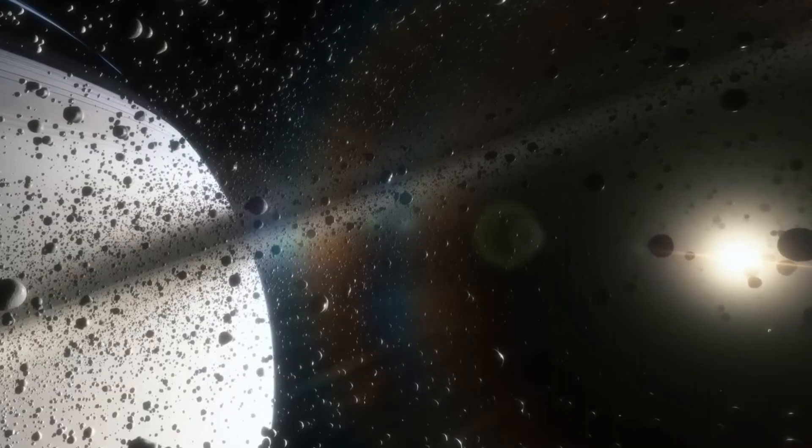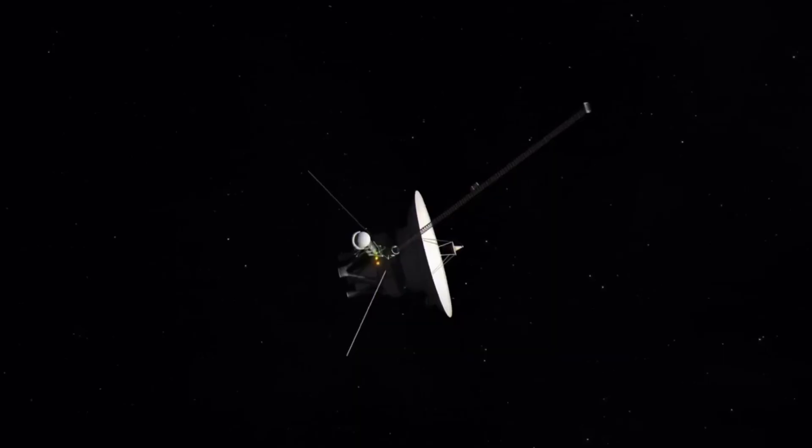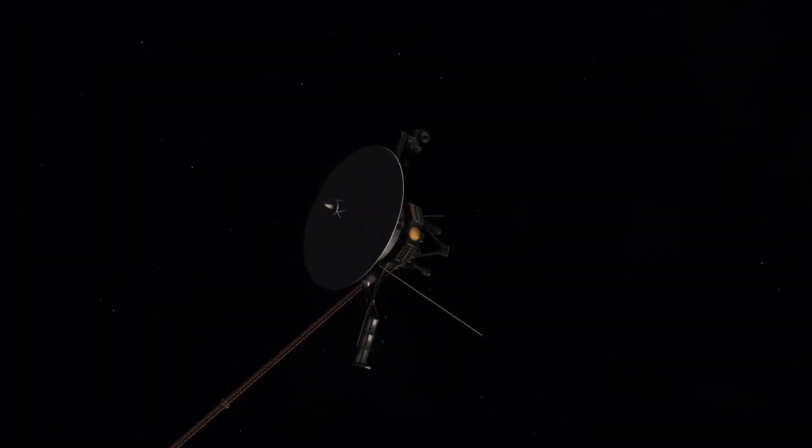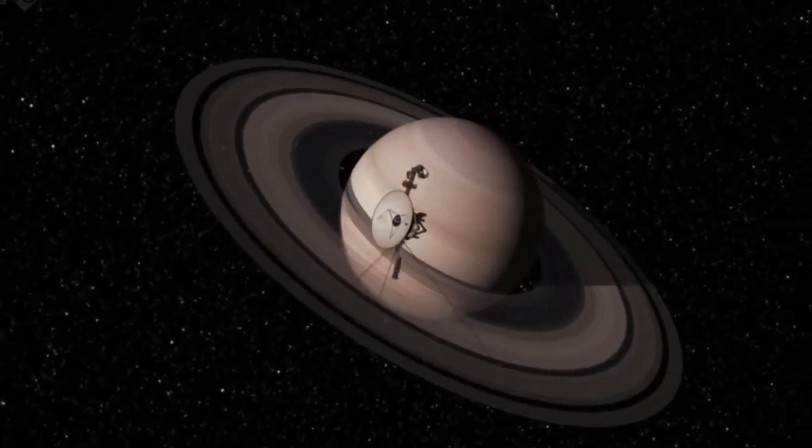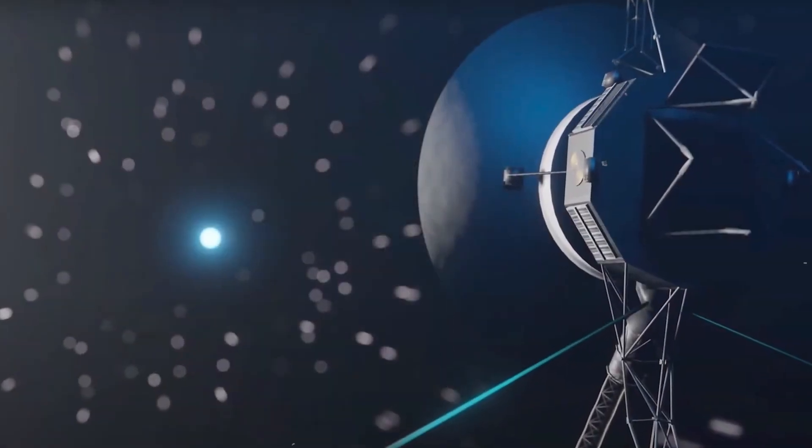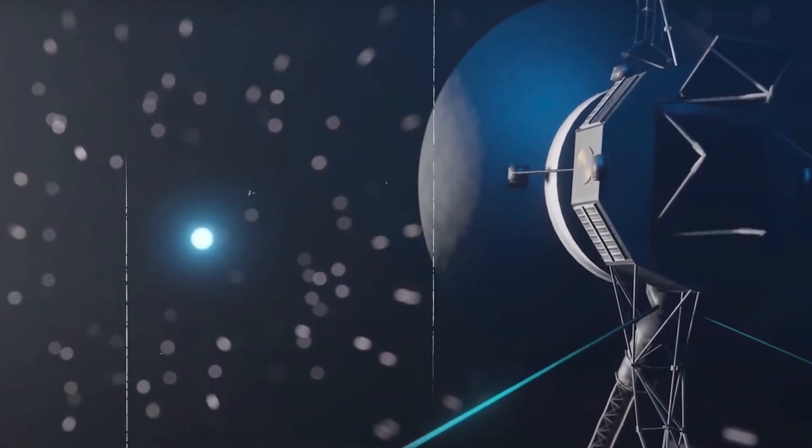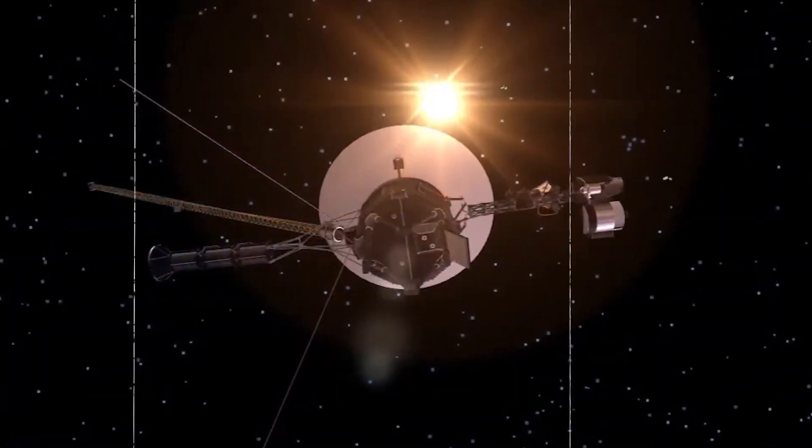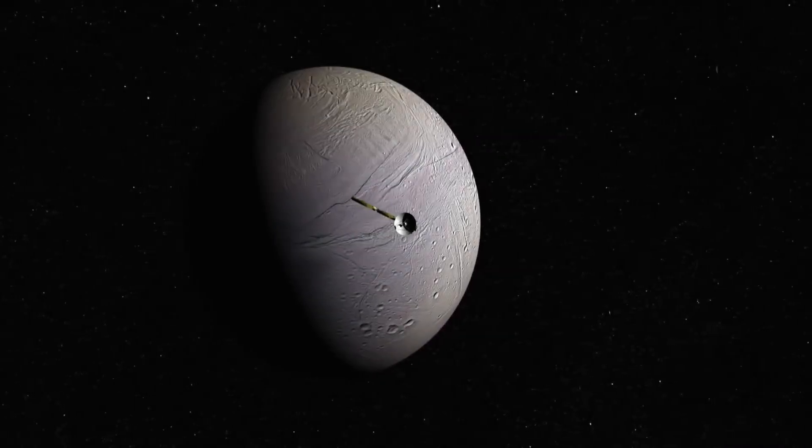From today's perspective it seems almost absurd, but when Voyager 1 set out into the vastness of space on September 5th, 1977, no one suspected that this was the beginning of one of the greatest success stories in space travel. No wonder, after all the originally predicted lifespan of the identical Voyager probes was just five years.